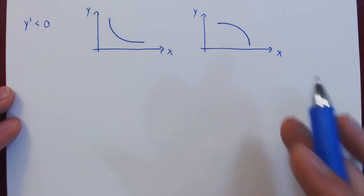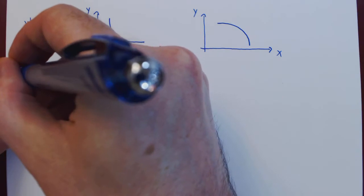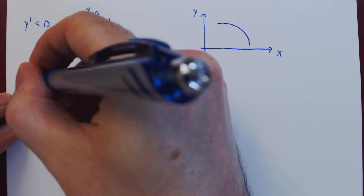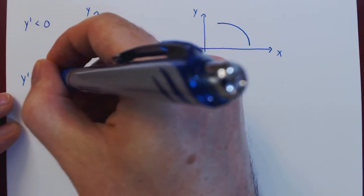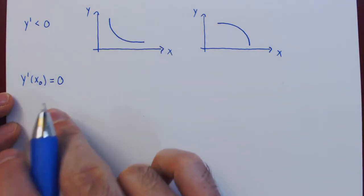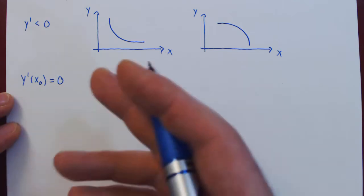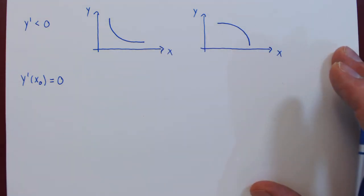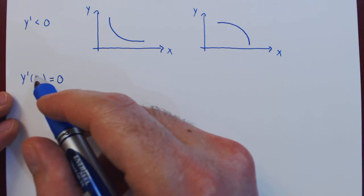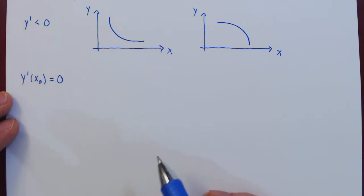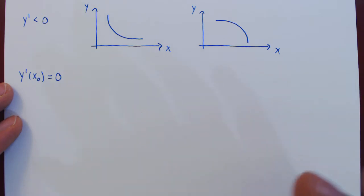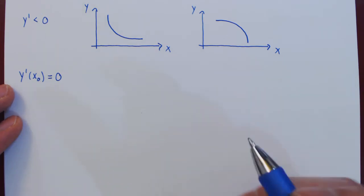Let's assume that we have a given value of x, say x₀, where at this point the derivative is zero. Let's see what this tells us about the function and how many possibilities there are when it comes to the shape of the graph of the function around the point x₀. As we will see, there are in this case four distinct possibilities.